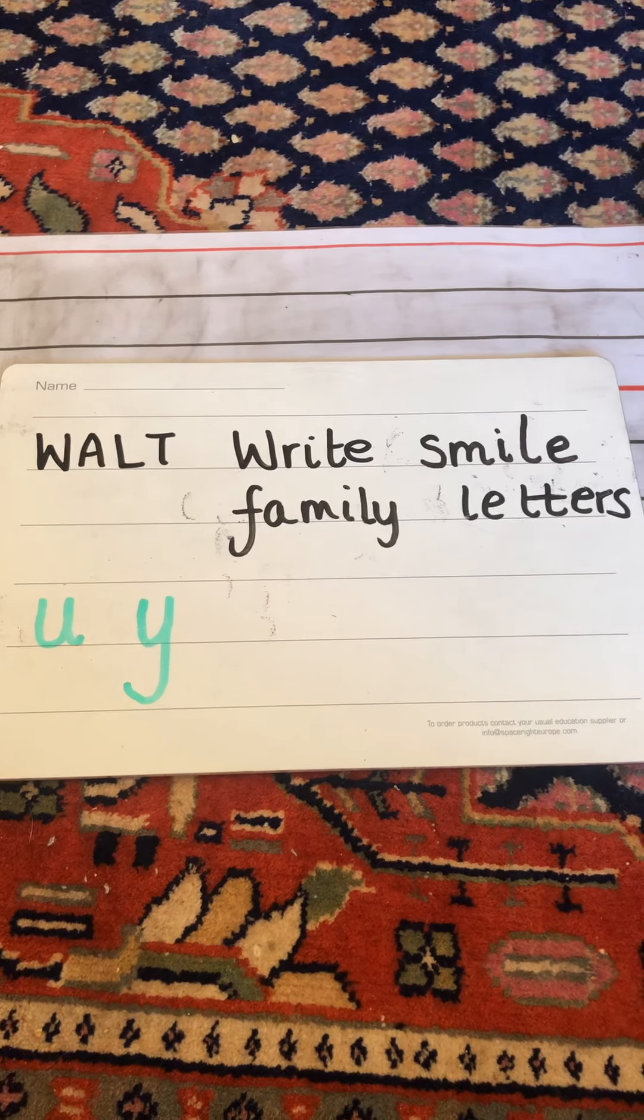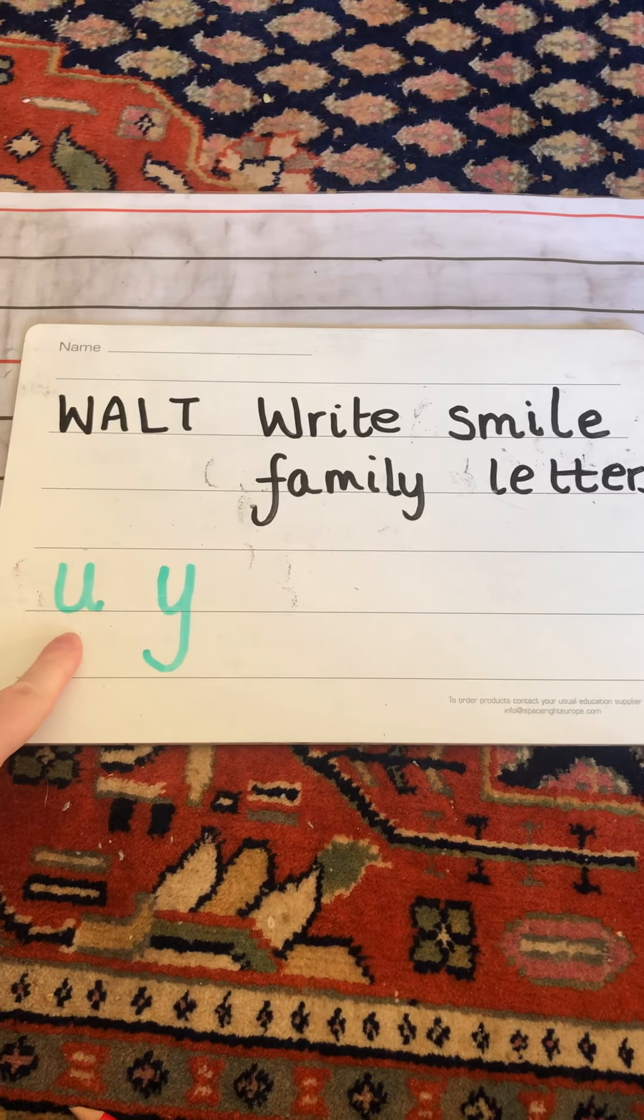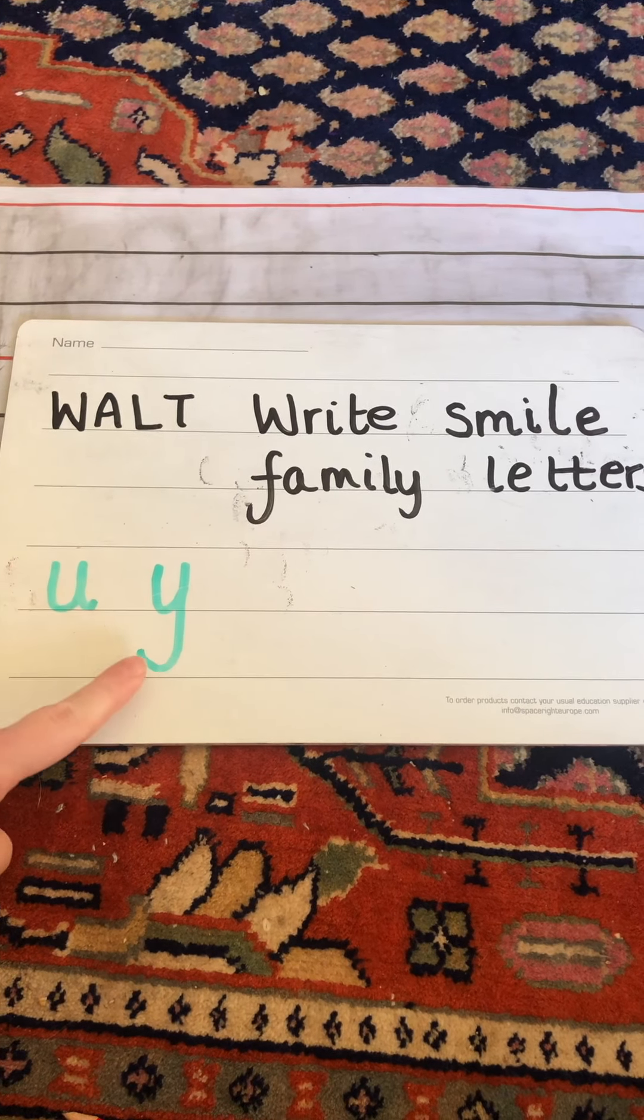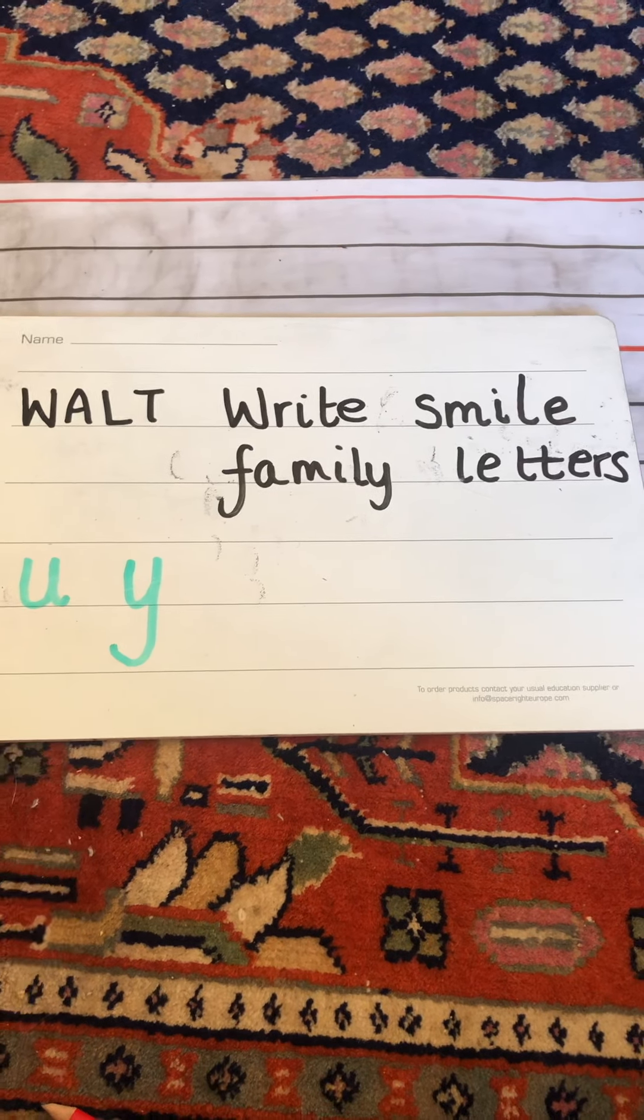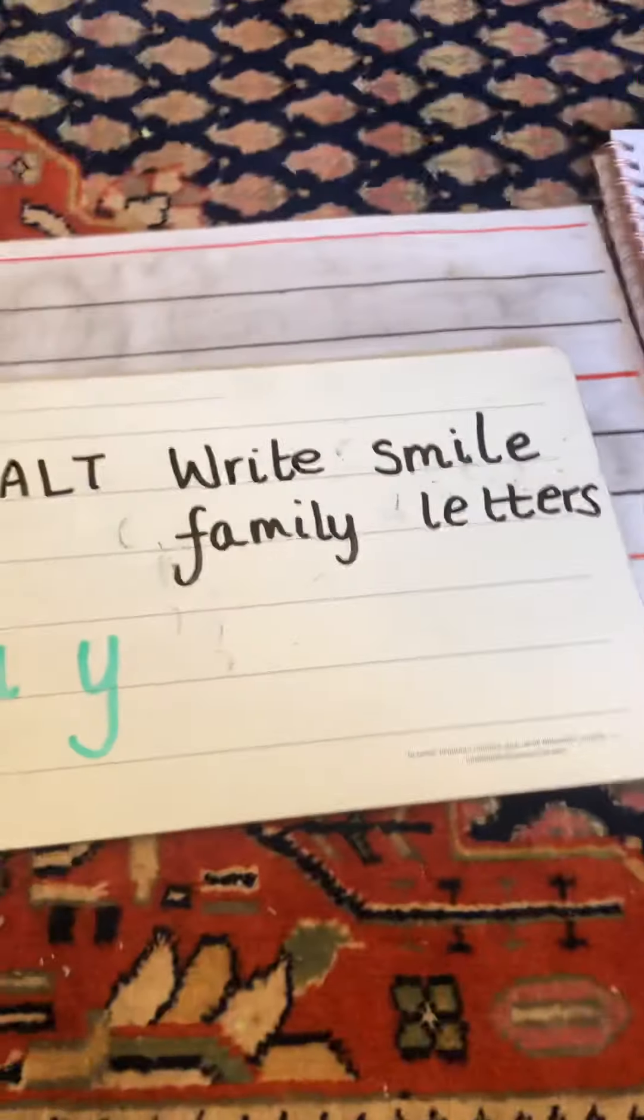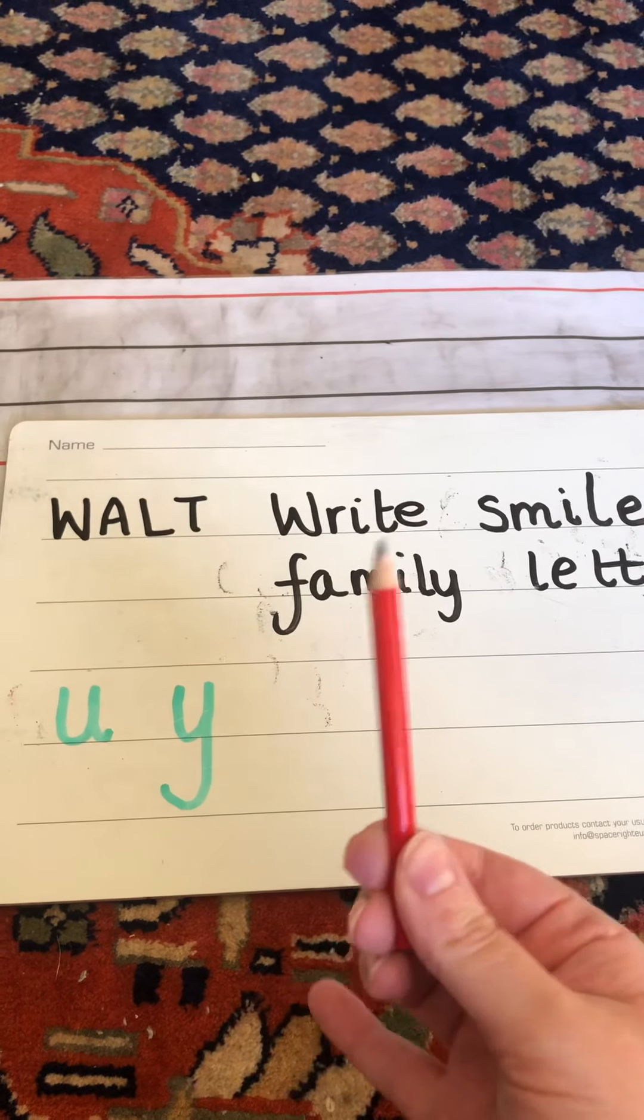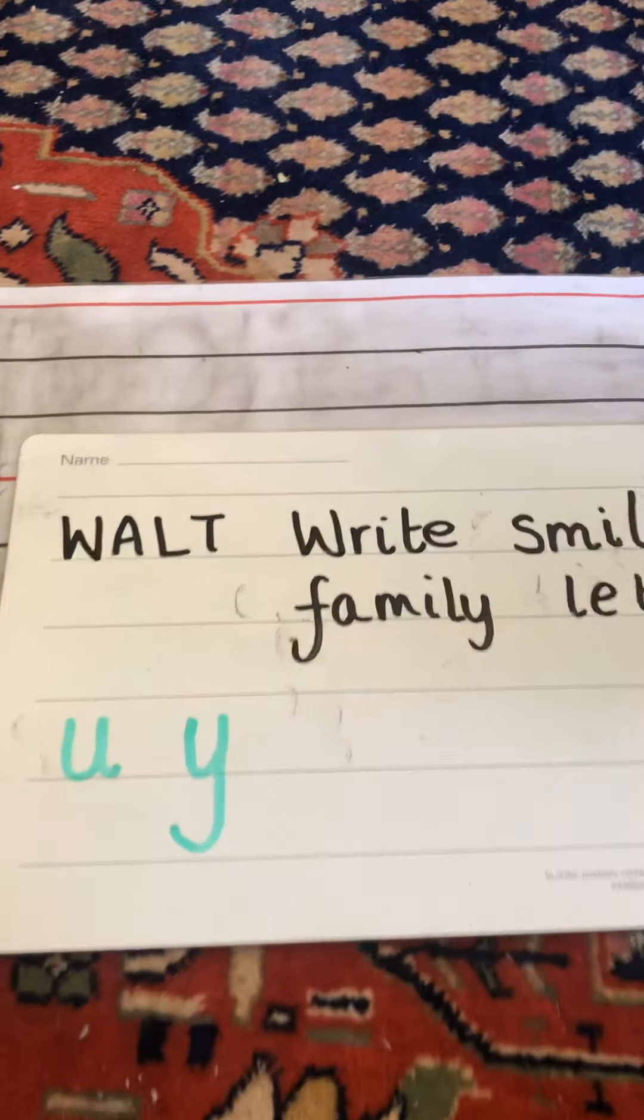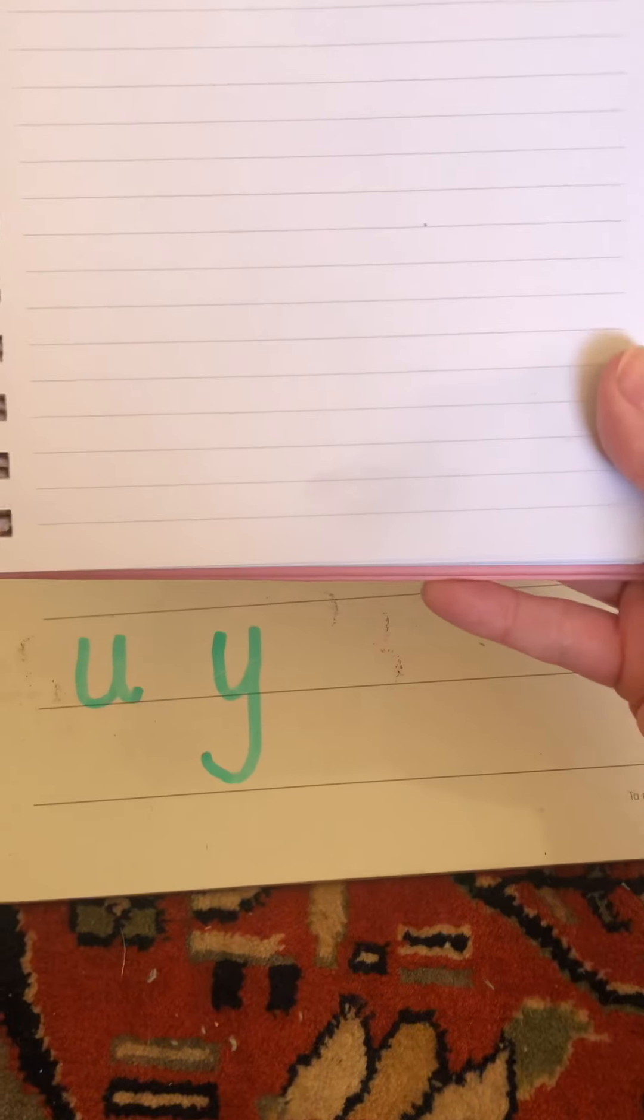So today we're learning to write smile family letters: U that makes the U sound and Y that makes the Y sound. Now as always you'll need a pencil because that's the best way to practice writing letters, and you'll need some kind of lined paper—that could be your homework book or any kind of lined paper will do.